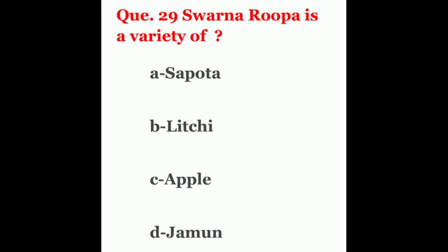Question 29. Svaranrupa is a variety of? The options are sapota, litchi, apple, or jamun. The correct answer is litchi.